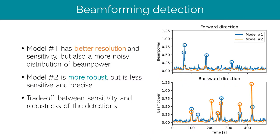We can see this more clearly by computing a profile of beam power versus time. The top panel shows beam power for both models in the forward direction, and the bottom panel shows the backward direction. Model 1, the blue line, has better sensitivity but also more noise, whereas model 2, the orange line, exhibits peaks that stand out better from the background. In the forward direction, the model 2 peaks are very small and below the detection threshold, hence the absence of detections in this direction.